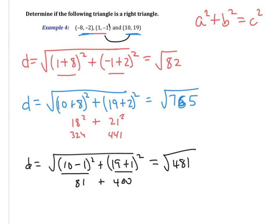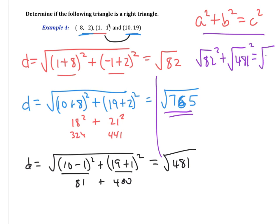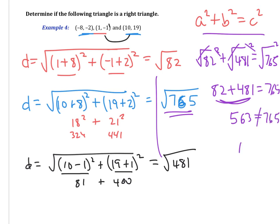Now we determine whether these three side lengths form a right triangle by plugging them into the Pythagorean theorem. The longest side must be c, so the square root of 765 is c. We check: (square root of 82) squared plus (square root of 481) squared equals 82 plus 481, which is 563. But 563 does not equal 765, so this is not a right triangle.